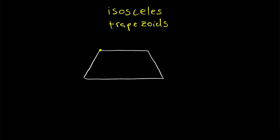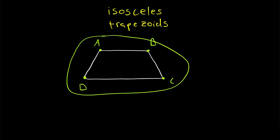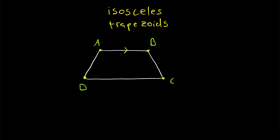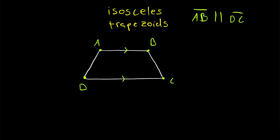Alright, I think this is a pretty good isosceles trapezoid. For convenience, let's label its vertices A, B, C, and D. Remember, since this is a trapezoid it has exactly one pair of parallel sides — side AB in this case is parallel to side DC. And we're saying that this is an isosceles trapezoid, which means it has a pair of congruent base angles.